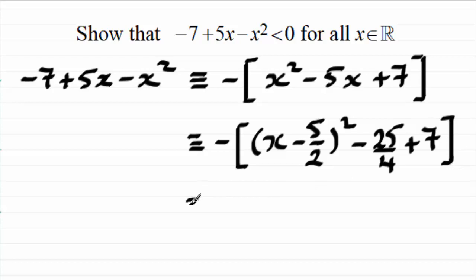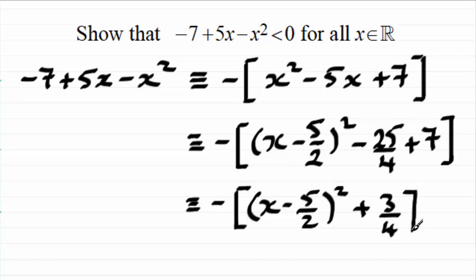Okay, we're nearly there. So we've got that this is identical to minus, and I'm just going to tidy this up: we've got (x - 5/2)² and then -25/4 + 7. 7 is the same as 28/4, so 28/4 - 25/4 is just going to leave me with +3/4, plus three quarters. And we'll just finish that bracket off there.